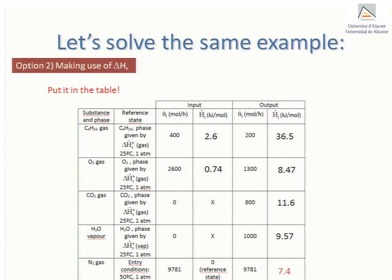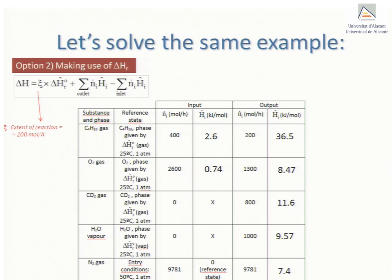So now that the table is complete we apply the equation for delta H using the extent of reaction we calculated earlier, 200 moles per hour. When we do this the final result is obviously the same as before, minus 425,192.2 kJ per hour.